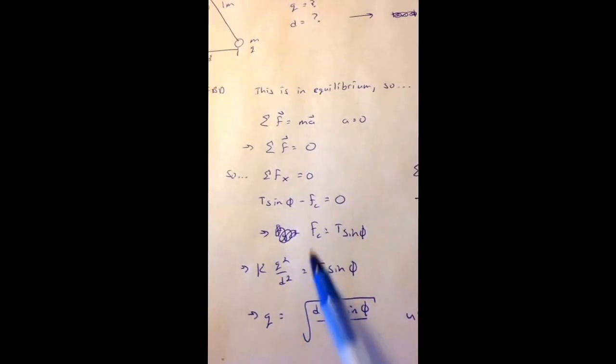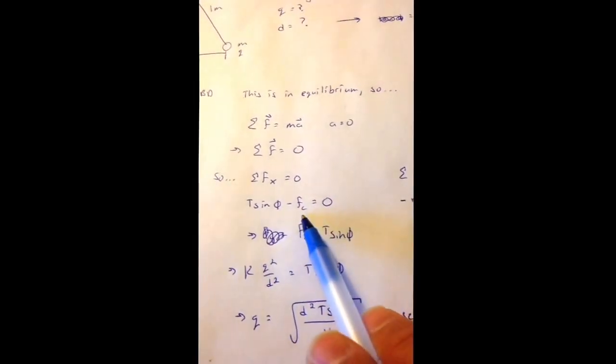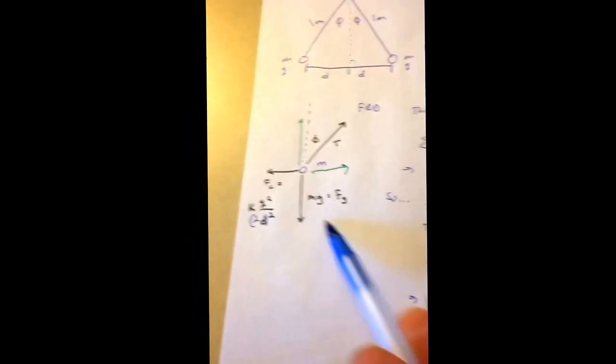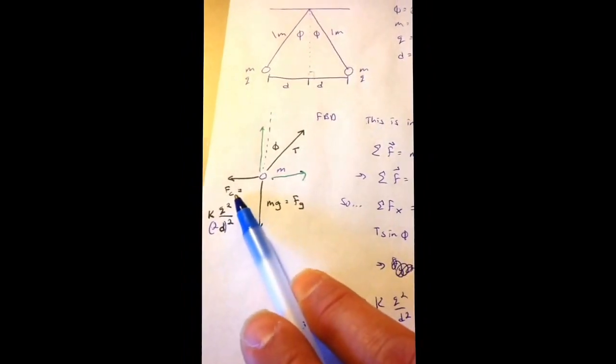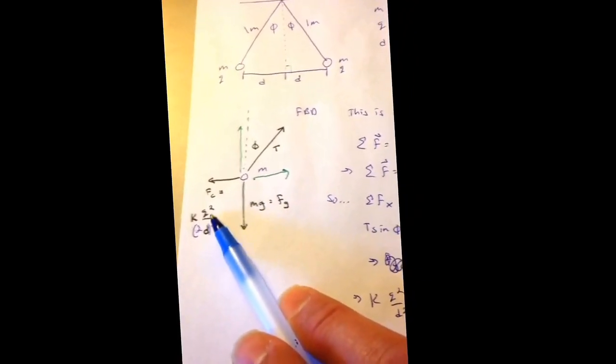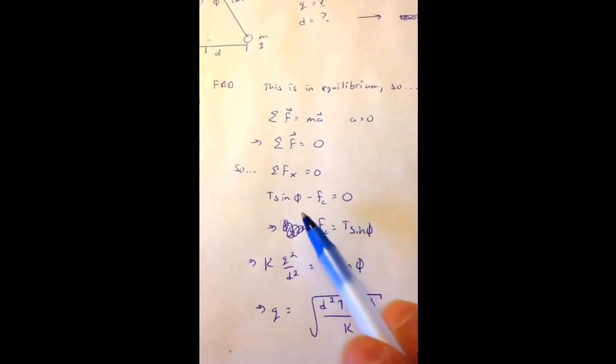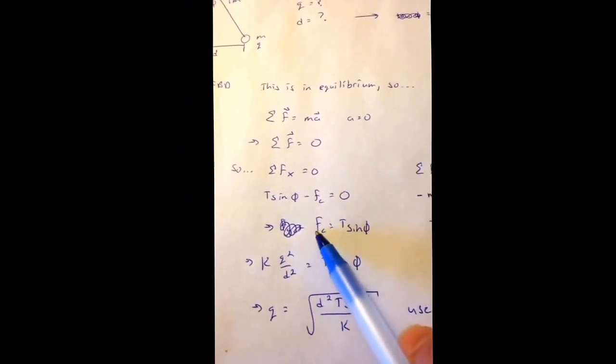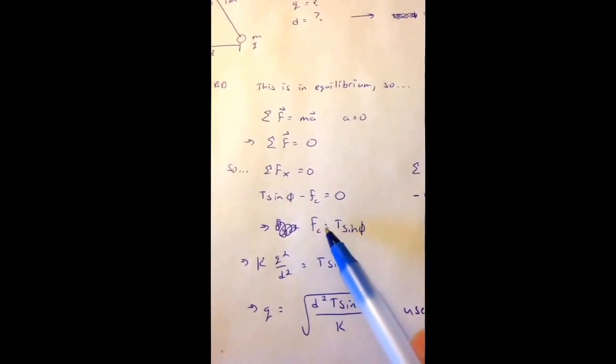And then this is just going to be kq squared over 2d squared. So I can do that here. T sine phi minus the Coulomb force, which is this one. I haven't unpacked it yet. I just wrote it like this to save time. I'm going to unpack it eventually, because I have to to get to q. So I'm going to come over here. This is equal to zero.